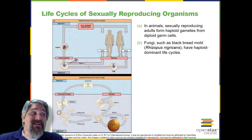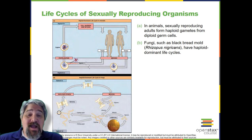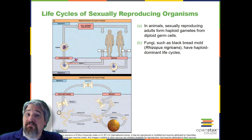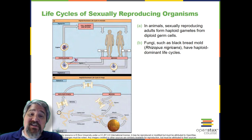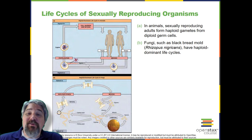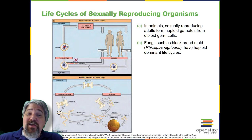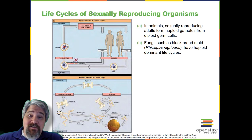Here is the question that accompanied this figure: if a mutation occurs so that a fungus is no longer able to produce a minus mating type, will it still be able to reproduce? Most fungi and algae employ a life cycle strategy in which the multicellular body of the organism is haploid. During sexual reproduction, specialized haploid cells from two individuals join to form a diploid zygote. The zygote immediately undergoes meiosis to form four haploid cells called spores. That's in the bottom figure on this slide.